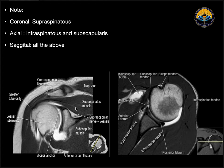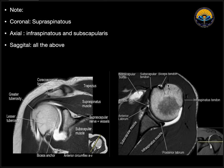On the coronal section, below the acromioclavicular joint, we will have supraspinatus going and inserting on the greater tuberosity. On this axial section, we can see the humerus, the scapula, the glenoid cavity, and we can see the subscapularis muscle anterior to the scapula. We can see the subscapularis tendon and its insertion on the lesser tuberosity. Posterior to the scapula, we can see the infraspinatus muscle, its tendon, and its insertion on the greater tuberosity. Between the greater and lesser tuberosity, we can see the bicipital groove, and in this groove, we can see the long head of the biceps tendon with the transverse humeral ligament above it.